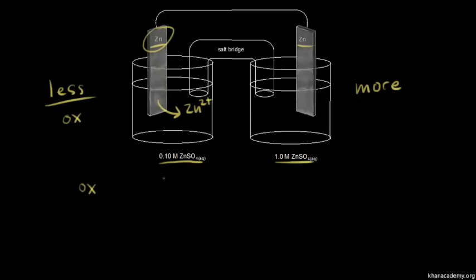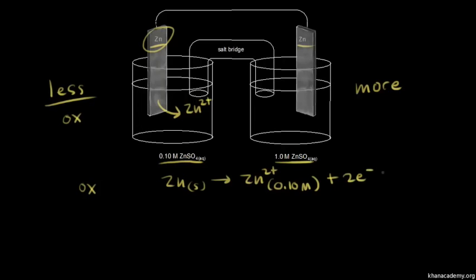So let's write that down. We have solid zinc turning into Zn²⁺ — I'll write 0.10 molar to distinguish this from the other side — plus two electrons. So solid zinc loses two electrons to turn into Zn²⁺. Those two electrons move through our wire and we create a current.